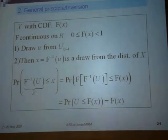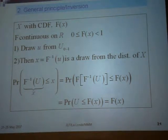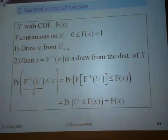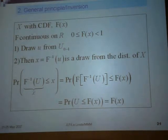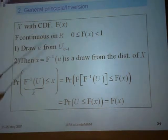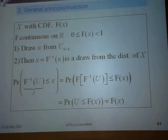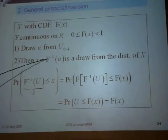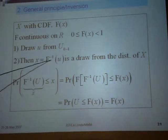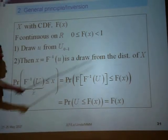Now we'll move to the second part: given this uniform number from 0 to 1, how do you generate any kind of distribution? We'll start with the basic principle called inversion. We consider a continuous random variable with cumulative density function F of x, where F of x is between 0 and 1. You draw a u from your generator U(0,1), and you take F minus 1 of u. This F inverse of u is a draw from the distribution of x.